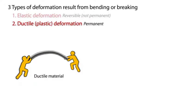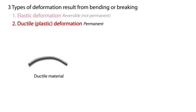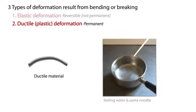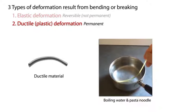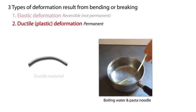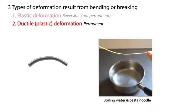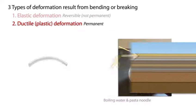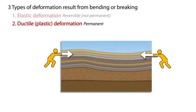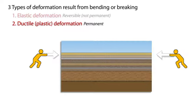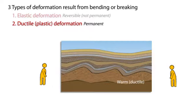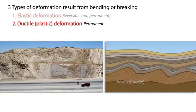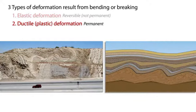Ductile deformation occurs when rocks undergo bending that remains even after the stress is removed. Using the spaghetti analogy again, an uncooked noodle undergoes ductile deformation when placed in boiling water and compressed against the bottom of the pan. When the stress is removed, the ductile deformation remains. Similarly, the same rock that can deform elastically could, under different temperature and pressure conditions found deep in Earth, undergo ductile deformation. We can see evidence of ductile deformation when rock layers deformed at depth are later uplifted and revealed at the surface, as in this road cut.